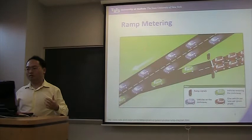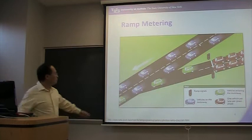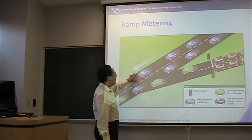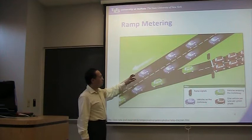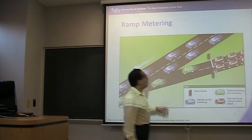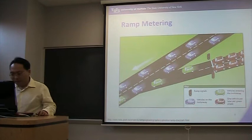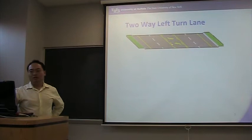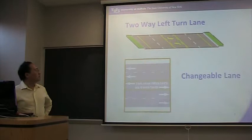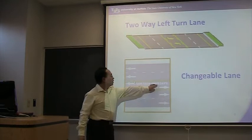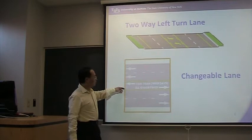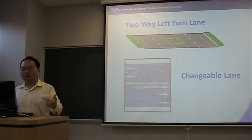Here are some concepts you are not frequently using. The first is ramp metering. In ramp metering, here is the freeway, here is a ramp. When there are too many cars in the freeway, the performance of the freeway will decrease significantly. That's why they set signals on the ramp to control the number of vehicles entering the freeway — this is called ramp metering. And this is TWFTL, two-way left-turn lane. There are also changeable lanes — for example, this lane for a certain time period will be westbound, and for all other times it will be eastbound.